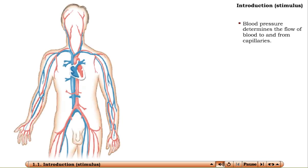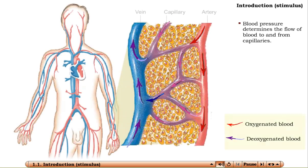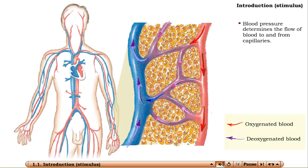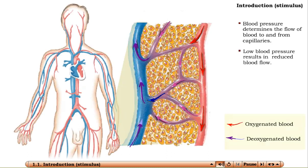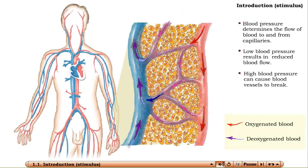Arterial blood pressure determines how much blood flows into the capillaries, where the exchange of nutrients and wastes between blood and body cells occurs. If the pressure is too low, not enough blood goes into the capillaries.